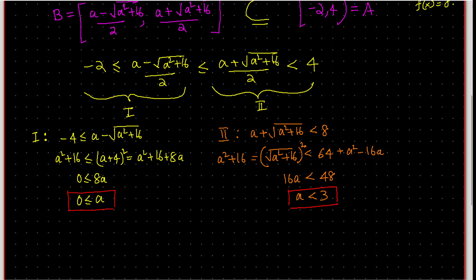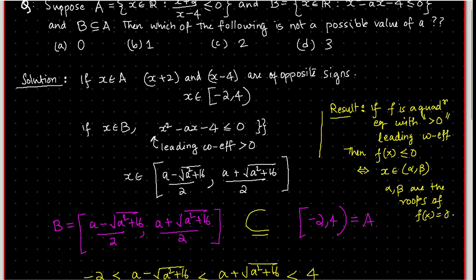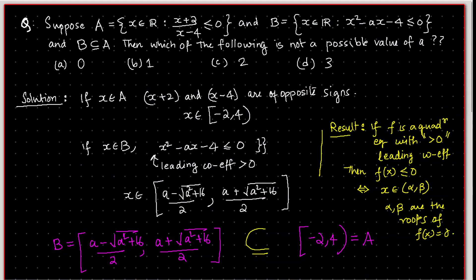Combining both inequalities, a lies in [0, 3), meaning a cannot take the value 3. So a can take the values 0, 1, and 2, but not 3. The question asks which value is not possible, and the correct answer is 3.